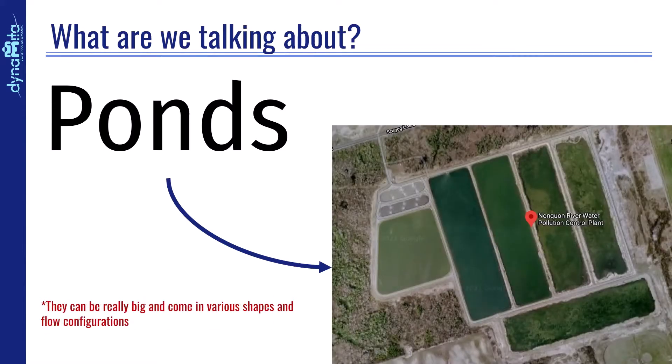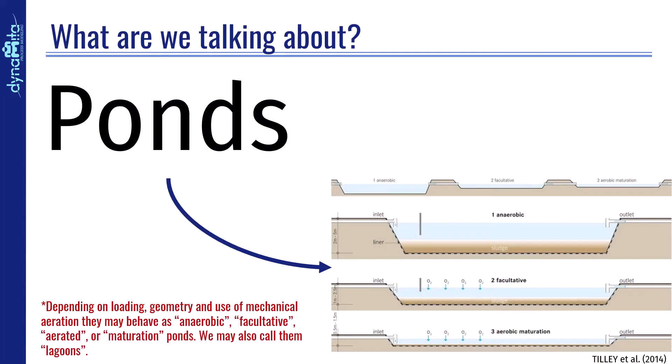Ponds can be really big and come in various shapes and flow configurations. And depending on loading, geometry, and whether there is any use of mechanical aeration, they may behave as anaerobic, facultative, aerated, or maturation ponds. We may also refer to them as lagoons.